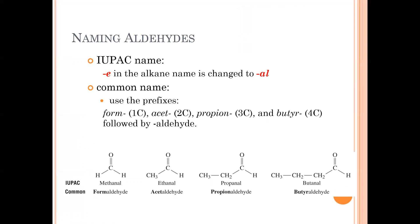When naming aldehydes, we name the longest chain of carbons first using the alkane name, then drop the E and add AL. For example, a four-carbon chain is butane, drop the E, add AL — butanal. We number so that the functional group (the carbonyl carbon attached to hydrogen) comes at carbon one, then name any substituents.